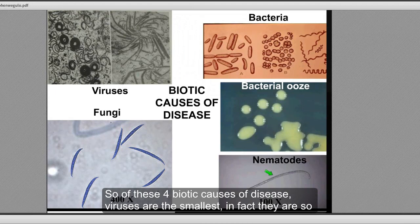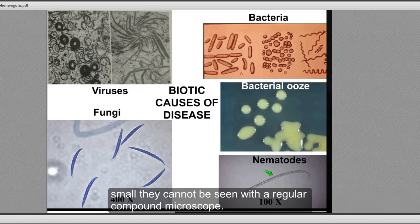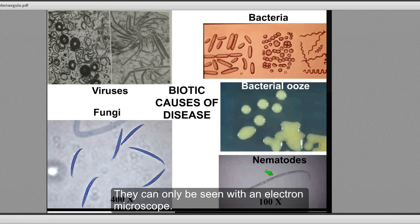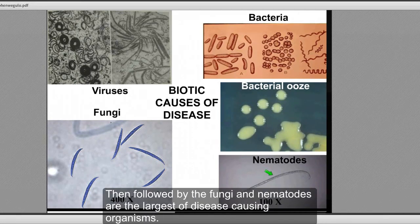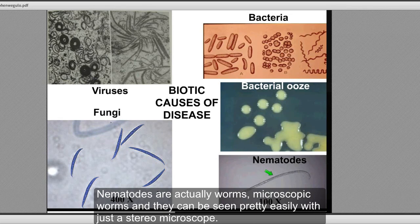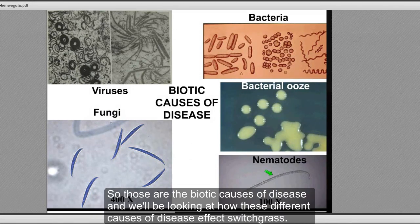Of these four biotic causes of disease, viruses are the smallest — they cannot be seen with a regular compound microscope, only with an electron microscope. Bacteria are the next larger group, followed by fungi. Nematodes are the largest of the disease-causing organisms; they are actually microscopic worms and can be seen fairly easily with just a stereomicroscope. This slide shows the relative size of these organisms. We'll be looking at how these different causes of disease affect switchgrass.